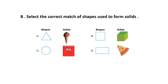Question number 8. Select the correct match of shapes used to form solids. Kids, look at the options carefully. The answer is Option B — a square is used to make cubes.